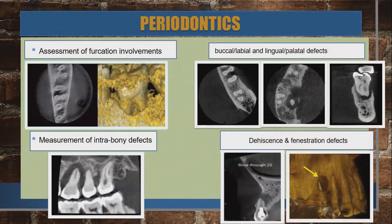For periodontics, indications include assessment of furcation areas, defects in lingual and palatal areas, window-like fenestrations and dehiscences, and measurement of intra-bony defects. There are not many additional indications beyond these for periodontics specifically.